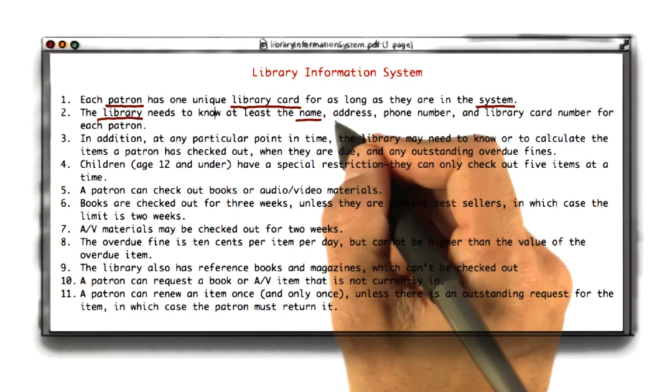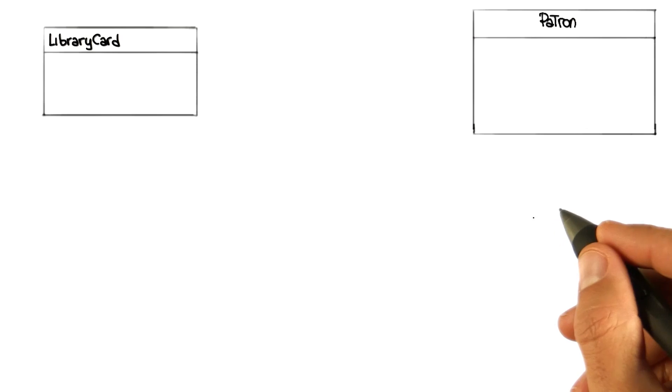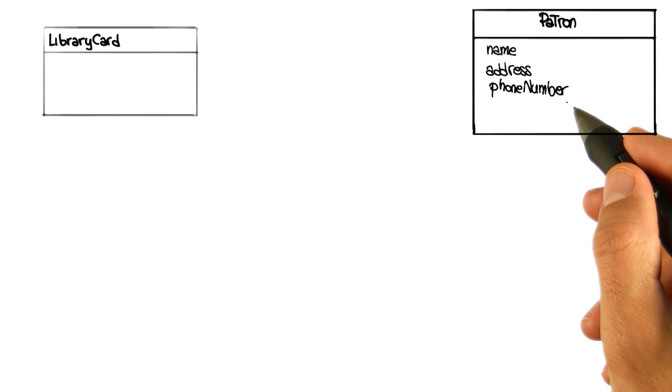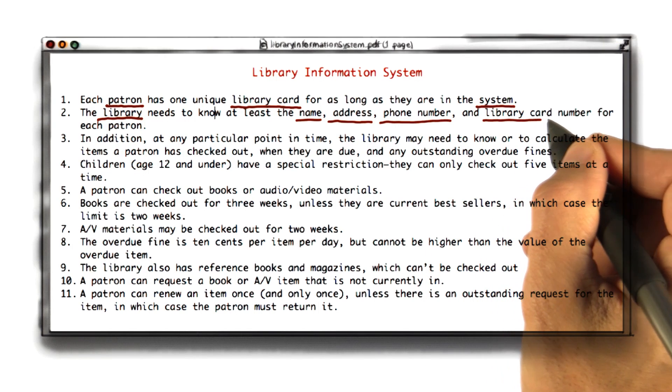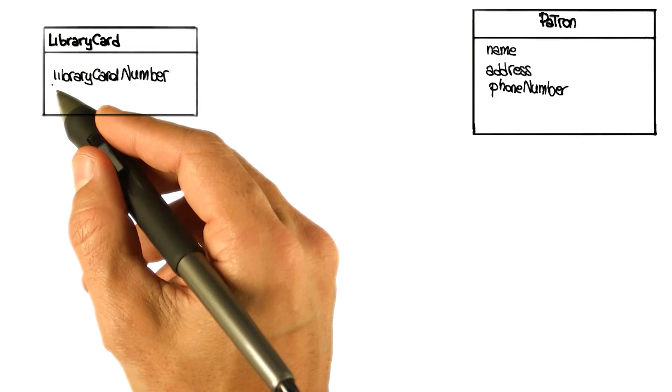Name, address, and phone number are interesting because they're important but they're not entities in themselves — they're more like attributes of something else. These are elements that are important for the patron; that's what we take down when we issue the cards. So I'm going to take those and make them attributes of the patron class. Similarly, the library card number seems to be associated with the library card — it's printed right on it — so we'll put that as an attribute of the library card.